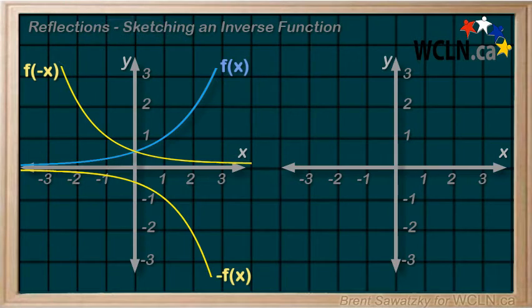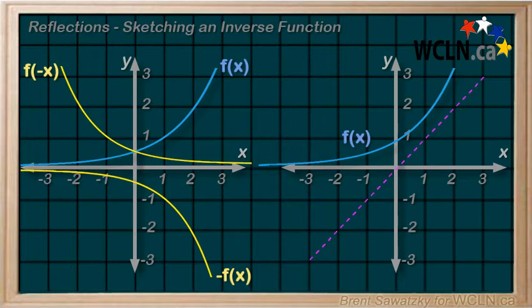It's time to introduce one more type of reflection. And this time, we're going to reflect around a line that passes right down the middle between the x and y-axes. This is the y equals x line, a very basic linear equation, with a slope of 1.